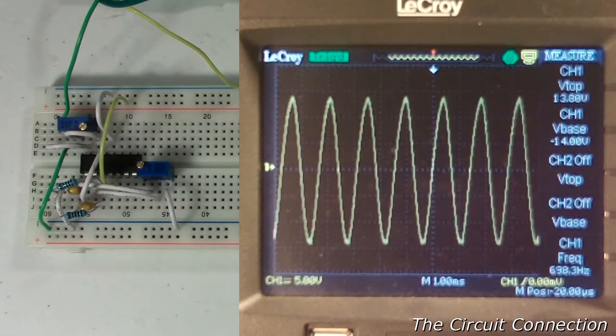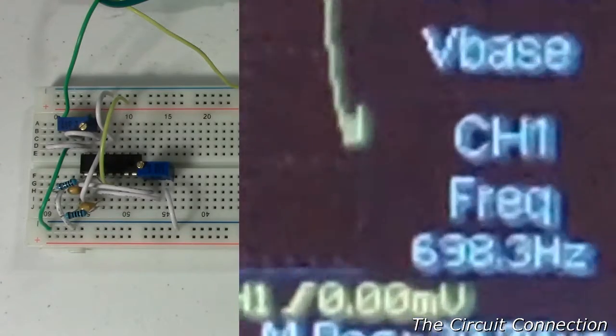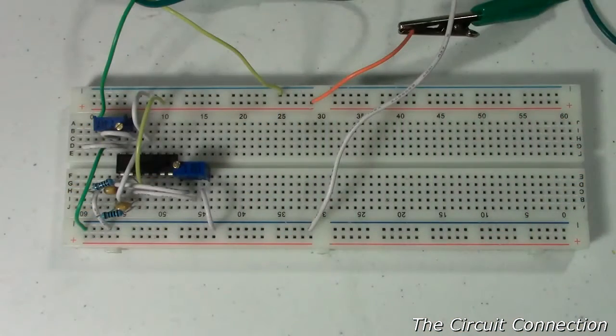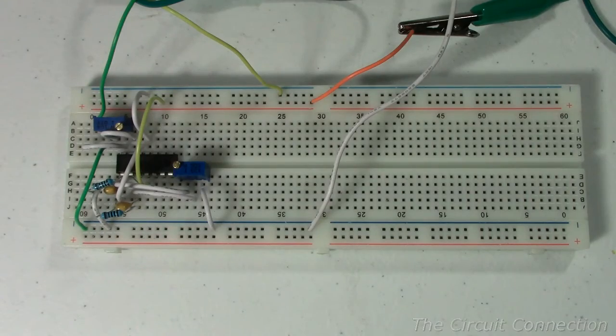And if we look down at the bottom, we can see that the operating frequency is approximately 698.3 hertz, pretty close to 700 hertz. So that will do it for this very short demonstration on a Wien bridge oscillator circuit. Thank you for watching, and have a nice day.